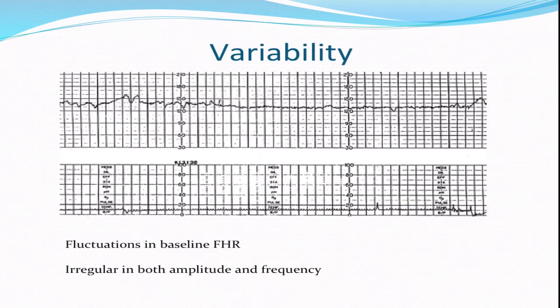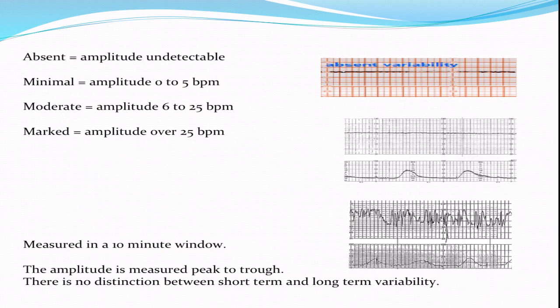Variability refers to fluctuations in the baseline fetal heart rate from moment to moment. They are irregular in both amplitude and frequency, and are categorized into four levels: absent variability means virtually undetectable amplitude fluctuations; minimal ranges between 0 to 5 beats per minute; moderate is 6 to 25 beats per minute; and marked — sometimes referred to as a saltatory pattern — is an amplitude over 25 beats per minute. In general, minimal to moderate beat-to-beat variability is considered normal, while absent variability is considered abnormal and potentially ominous.